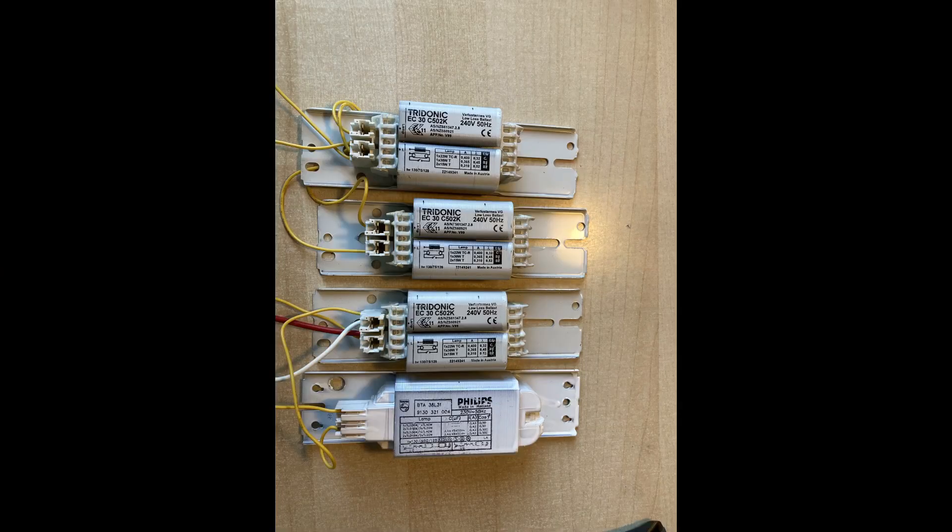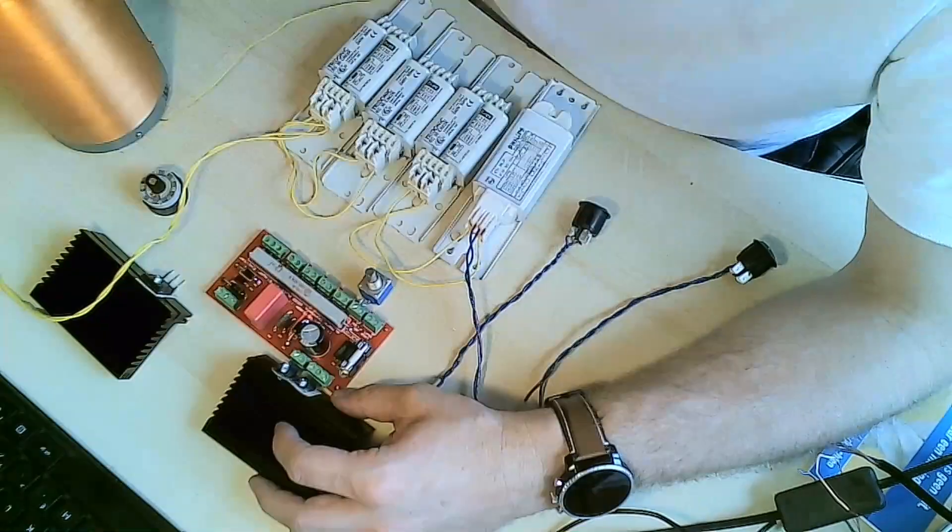Now before we can start assembling, let me show you a photo of the inductive ballast coils that I use. Usually they are used for a fluorescent light and we are kind of abusing them to create a large inductive power.